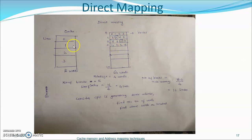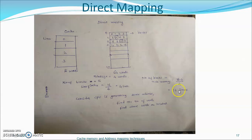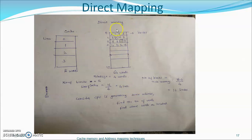For the direct mapping example, the main memory consists of 64 words with a block size of 4 words, giving 16 blocks in main memory. The cache has 16 blocks divided by 4 words per line, giving 4 cache lines. Suppose the CPU generates a 6-bit address; we need to find the number of words and the location of these words within the cache memory.